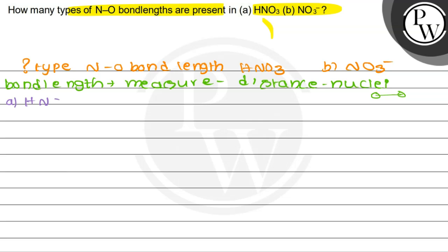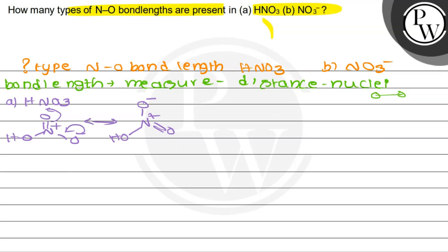Coming to the structure of HNO3 — N double bond O, and here OH, and here it is O- and N+. So there is one more resonance structure here: the negative charge will be shifted, and the double bond will be shifted to the other side. That gives one more resonance structure with oxygen having a negative charge, then OH, and here it will be a double bond O+. So these are the resonance structures.